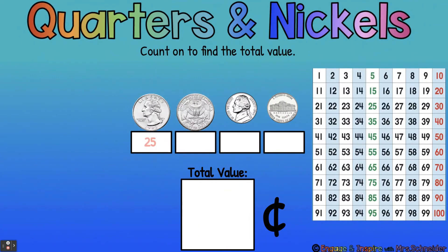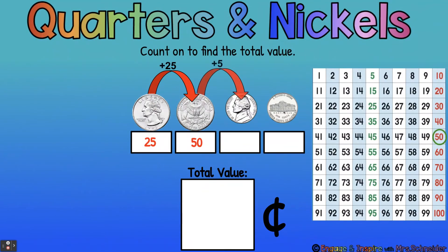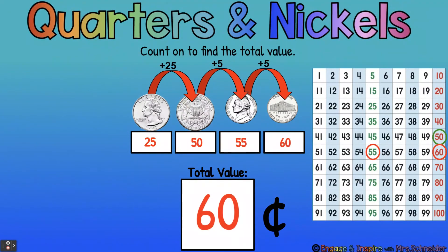Let's try again. 25, 50. Now count up plus 5 and then 5 more. 50 plus 5 is 55, and plus 5 more — what's 55 plus 5? 60. The total value is 60 cents.